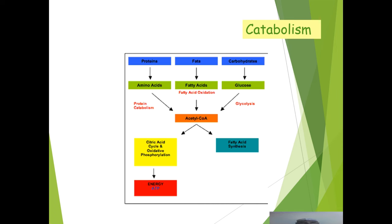This amino acid undergoes further metabolism. Protein metabolism produces acetyl-CoA, fatty acid catabolism and oxidation produces acetyl-CoA, and glycolysis also produces acetyl-CoA. So acetyl-CoA is a central metabolite. It can go into the TCA cycle, then into oxidative phosphorylation, or be used for fatty acid synthesis, producing energy.